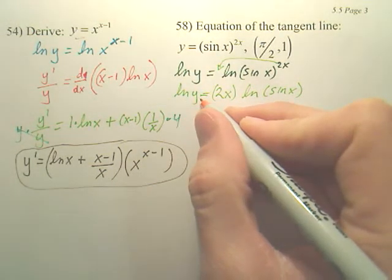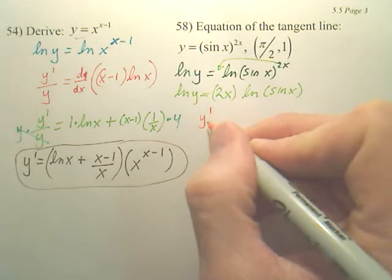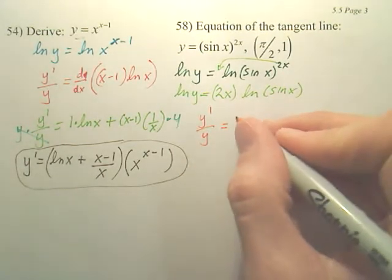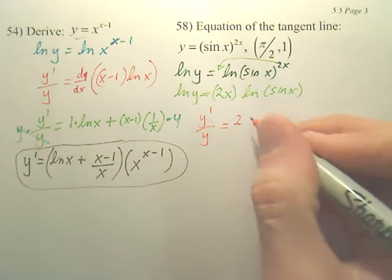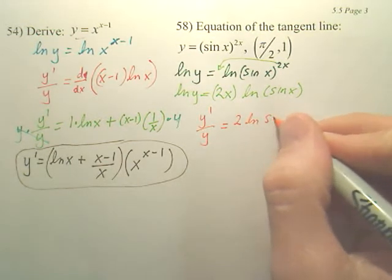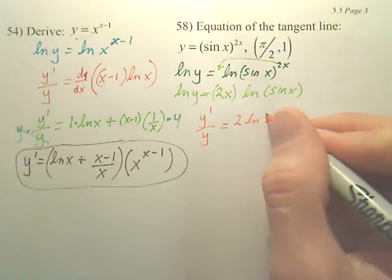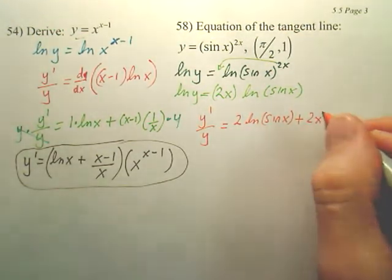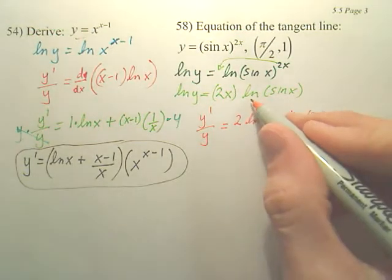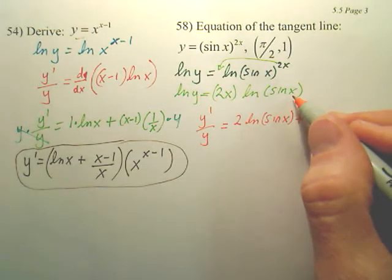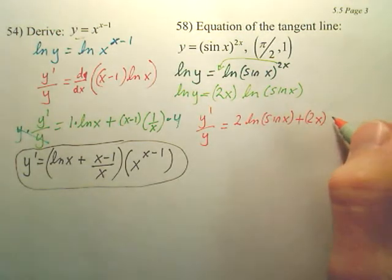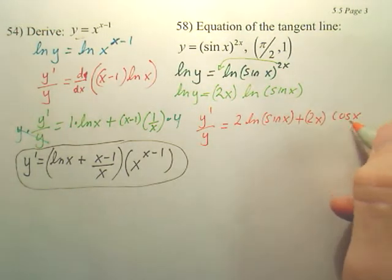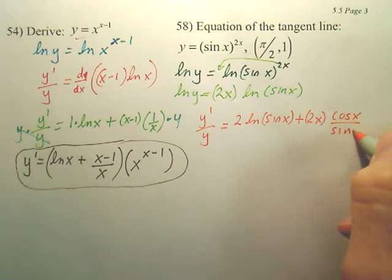Now we derive both sides. The derivative of ln y is y prime over y. This is going to be a product rule, so it's going to be 2 ln sin x plus 2x. And the derivative of ln sin x is going to be u prime over u.